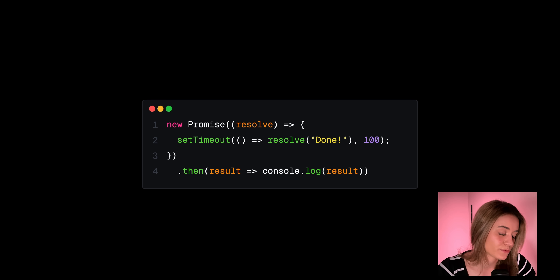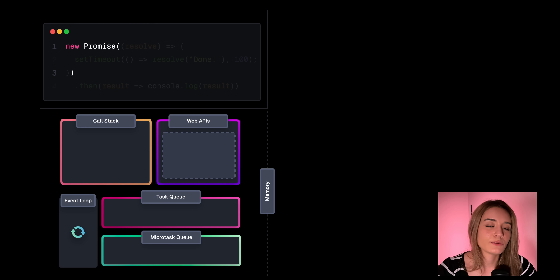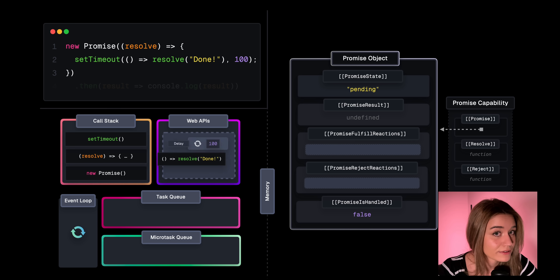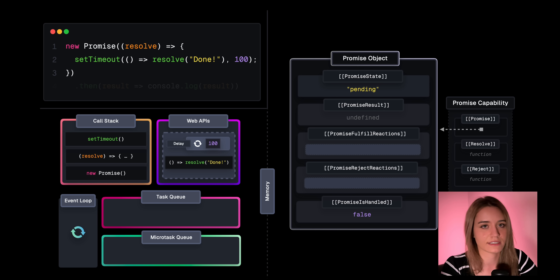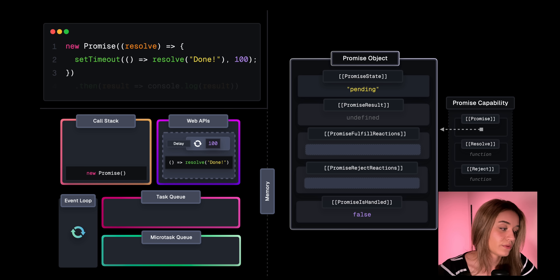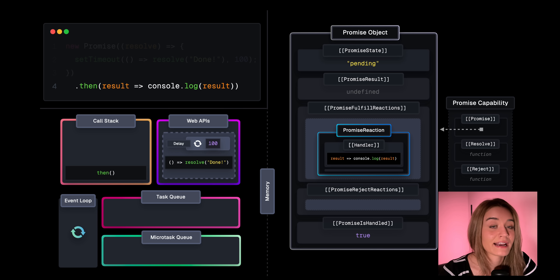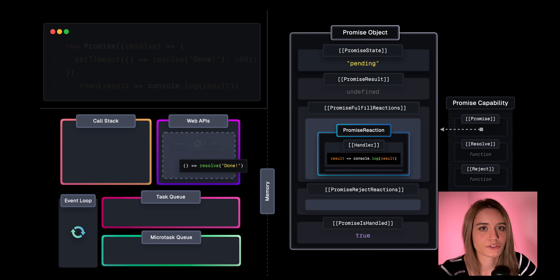So let's see how the execution goes for a promise constructor that has a setTimeout and a then handler. First, the new promise constructor is added to the call stack and this creates the promise object. The executor function is called, and on the first line we have a setTimeout. So setTimeout is added to the call stack, and this schedules the timer — in this case 100 milliseconds — with the callback that eventually calls resolve. Then on the next line we have the then handler, so then is added to the call stack and creates the promise reaction record with the callback provided as its handler. Then it's popped off the call stack.